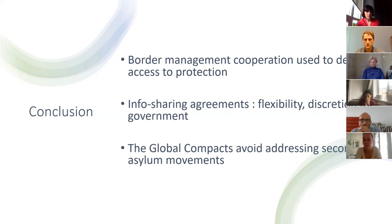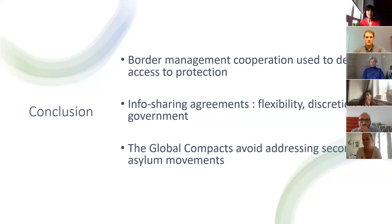The Global Compact on Migration and on Refugees also avoid addressing secondary asylum movements, and I think this is problematic — their silence is not neutral, it is meaningful. This silence in the two global compacts when it comes to addressing secondary asylum movements, combined with reiterating state responsibility, exacerbates the hardship faced by asylum seekers in accessing international protection. Thank you.